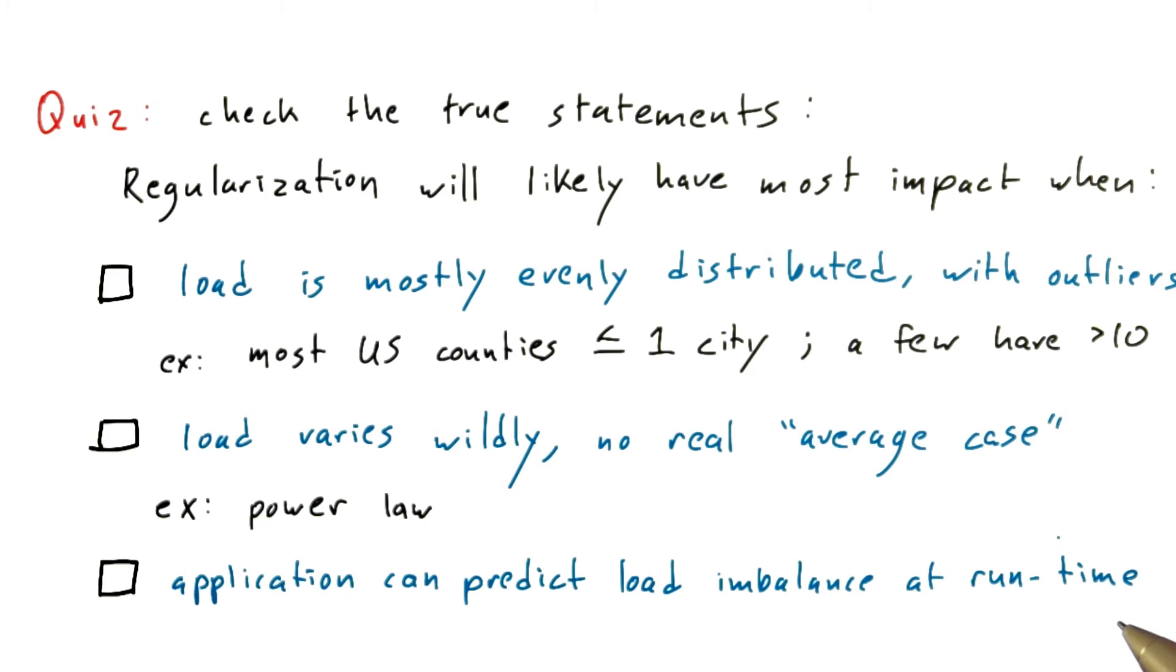Finally, is it true to say that regularization will likely have the most impact when the application can predict load imbalance at runtime? In other words, can predict where and how load imbalance will occur. An example here is that it might be a lot easier to add up the number of cities in a grid cell and notice that there's going to be load imbalance than to actually perform some heavyweight computation on each city.